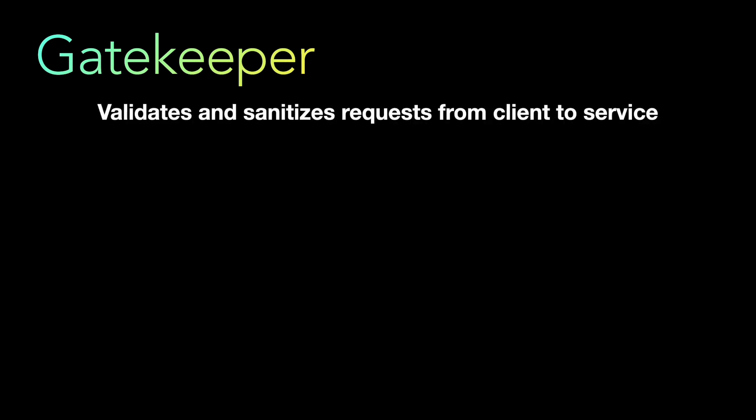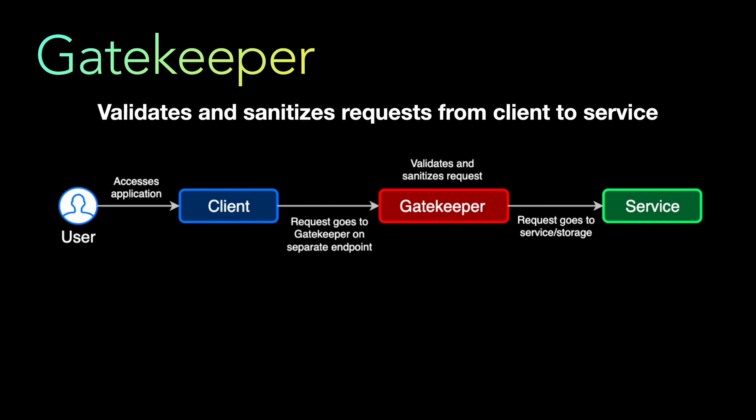The second security pattern is the Gatekeeper Pattern. It validates and sanitizes requests from the client to the service. Unlike the first pattern where you delegate authentication to a third-party provider, here you place another host or service — the gatekeeper — between the client and the backend service. Whenever a user tries to access the application, the client forwards the request not to the service directly but to this middleman.